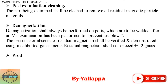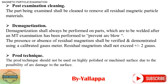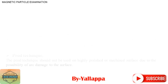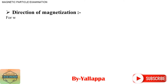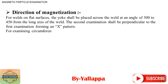The presence or absence of residual magnetism shall be verified and demonstrated using a calibrated Gauss Meter. Residual magnetism shall not exceed 2 Gauss. Prod Technique: The Prod Technique should not be used on highly polished or machined surfaces due to the possibility of arc damage to the surface. Direction of Magnetization: For welds on flat surfaces, the yoke shall be placed across the weld at an angle of 30° to 45° from the long axis of the weld.